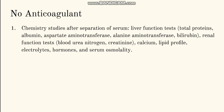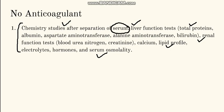Sometimes plain tubes are used when no anticoagulant is added. They are mostly used for biochemistry studies — tests such as liver function tests, renal function tests, calcium, lipid profile, electrolytes, hormone levels, and serum osmolality. No anticoagulant is used for these because we need to estimate levels like total proteins, blood urea nitrogen, and creatinine in the serum, and to get serum the clotting process must take place. So plain tubes are used for biochemistry tests.